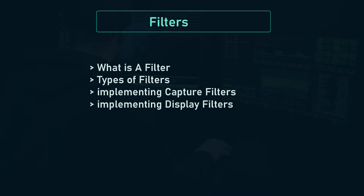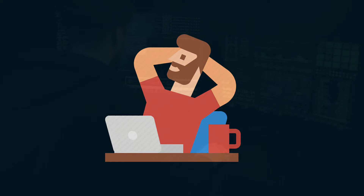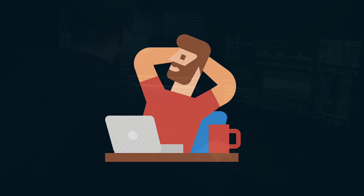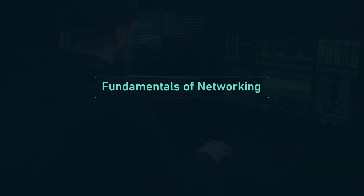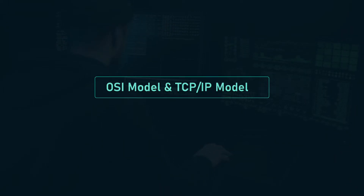After learning the fundamentals of Wireshark, we will take a short break from Wireshark and prepare ourselves for packet analysis and advanced concepts. We will learn the essential concepts required for packet analysis. Wireshark ultimately just displays the information that goes behind the scenes when data transmission happens. To understand that, we have to learn the networking essentials. We will start with both communication models: OSI and TCP/IP. They teach you how data is sent and received over the internet.